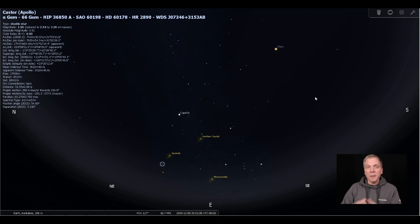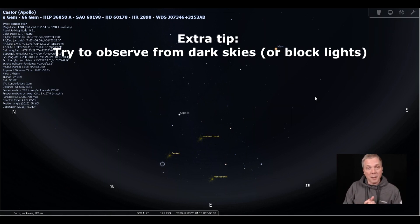Everyone just bundle up, get outside, get a nice chair where you can lean back and look up at the sky, and enjoy as much as you can. And try to get away from as many lights as possible too, because that will definitely help. The darker the area that you're able to be, or block lights, that's gonna assist you in seeing more of those Geminids.